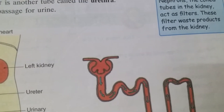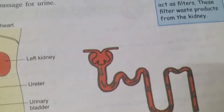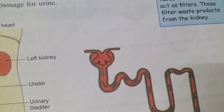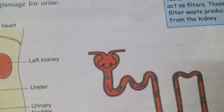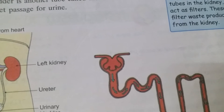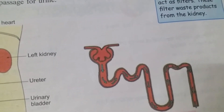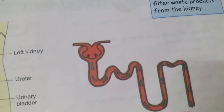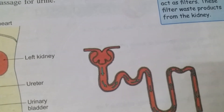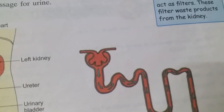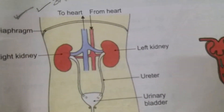The waste materials collected in the kidney form the liquid urine. Urine contains 95% water, 2.5% urea, and 2.5% waste products.